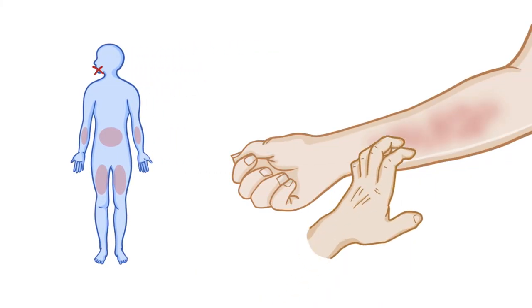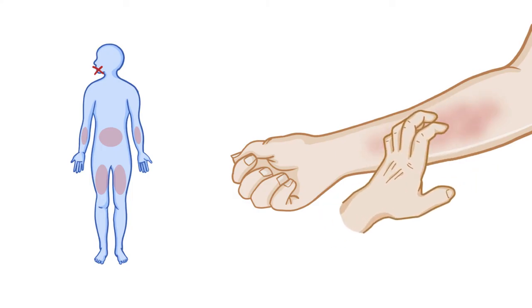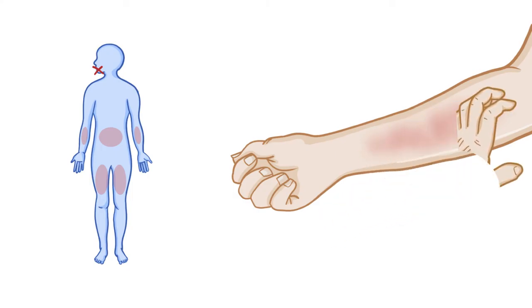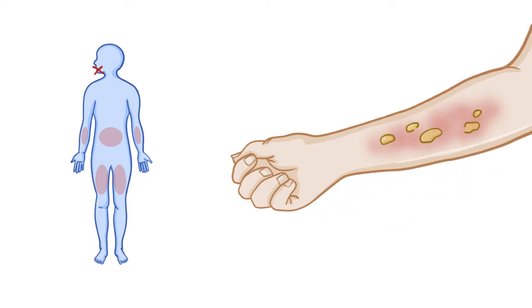Early on, there's a red and itchy rash, and over time it develops into large bullae, or blisters. The blisters typically evolve over a few days and leave behind crusted lesions that heal without scarring.